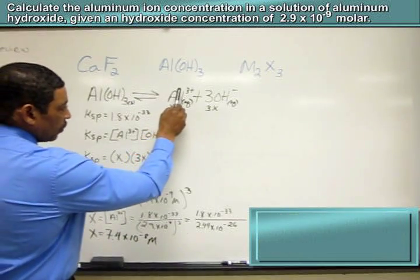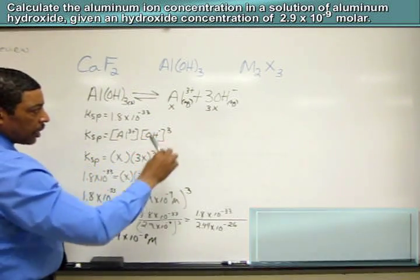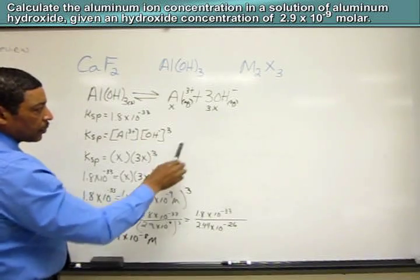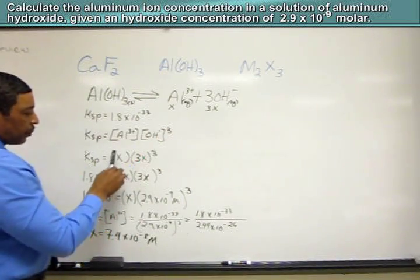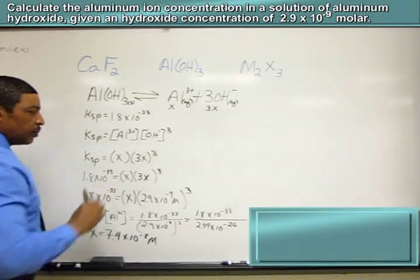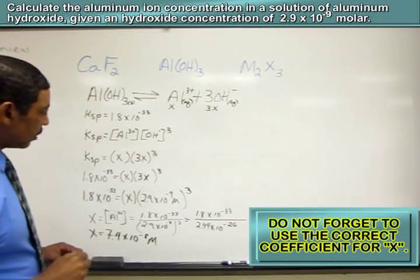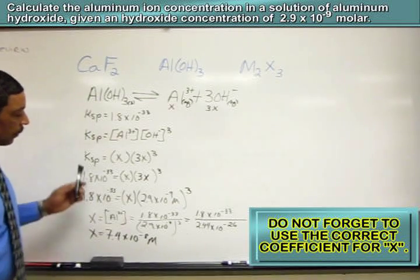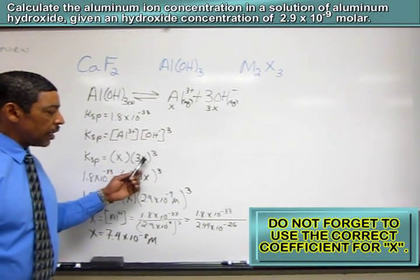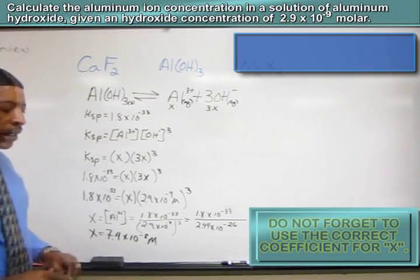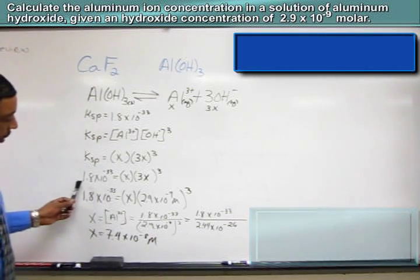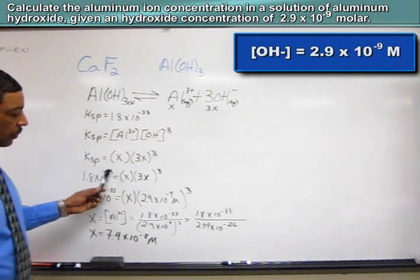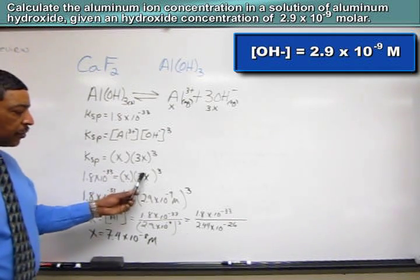Since the ratio is 1 to 3, we may now substitute x as follows: x and 3x, and place these x's in parentheses to represent the species in the KSP expression. So at this point, we have KSP equals x times 3x cubed. At this point, we now substitute the actual value for KSP, and the value is 1.8 times 10 to the negative 33 equals x times 3x cubed.